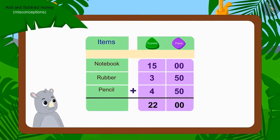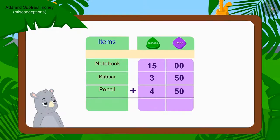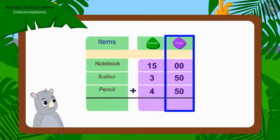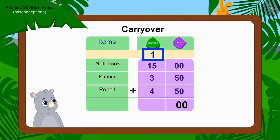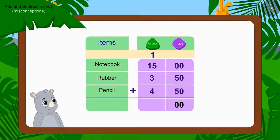No! Gaggu has done the addition wrong. Kids, can you tell what mistake Gaggu made? Let's find this out by putting this addition together. We'll add the numbers of paise. How much money do we get by adding 50 and 50 paise? 100 paise. We will write 100 paise as carry over in this way. Gaggu added 100 paise correctly, but he forgot to write the carry over made from it.